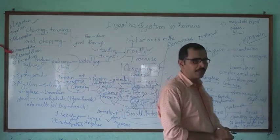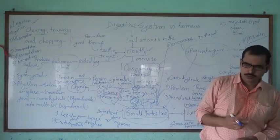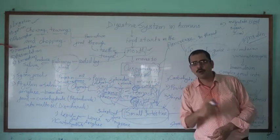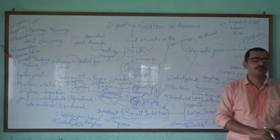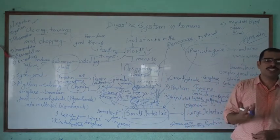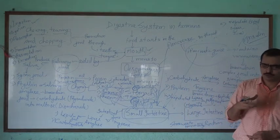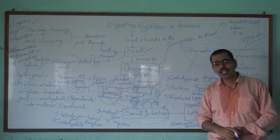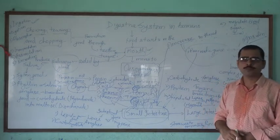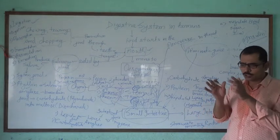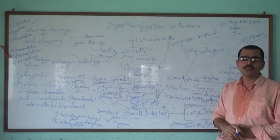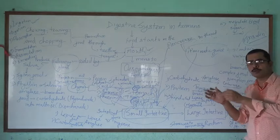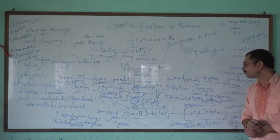In diabetic patients, insulin is supplied in the form of a syringe injection, supplied to their body so that the normal level of blood sugar will be restored in their body.